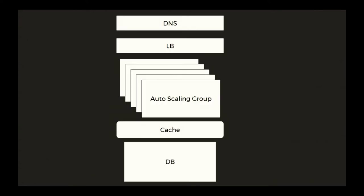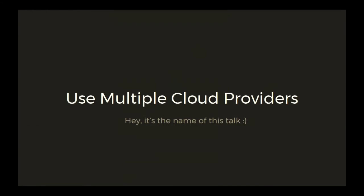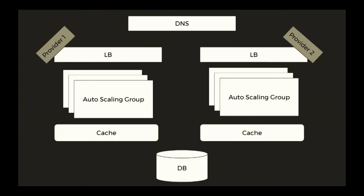But what you can also do is design for failure. Most of you know an architecture that looks something like this, but we can make it better — we can use multiple cloud providers. This is an example; your mileage may vary, but this is how we did it. We used DNS to load balance between providers, and we used just one database to work with the two providers.